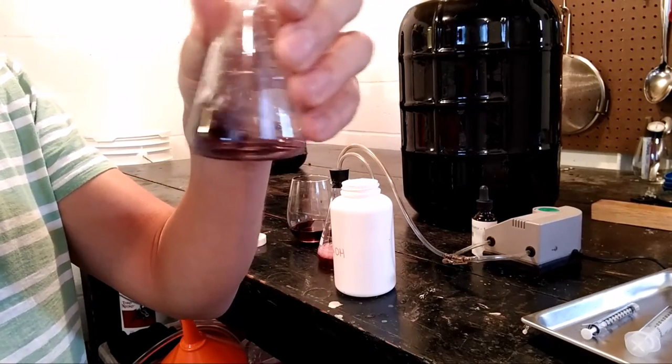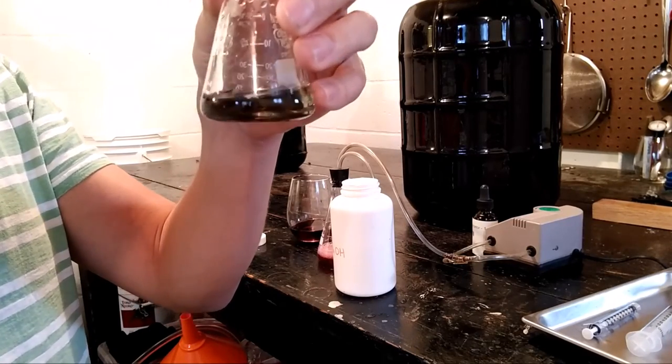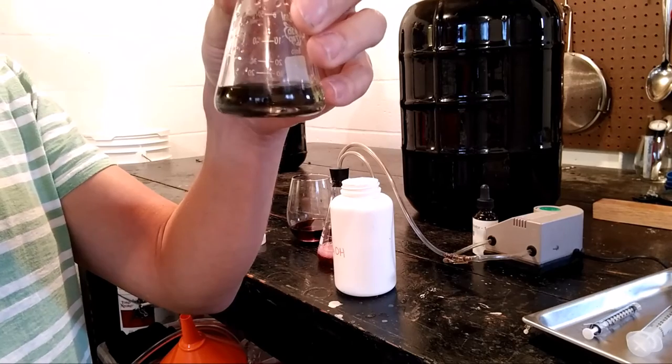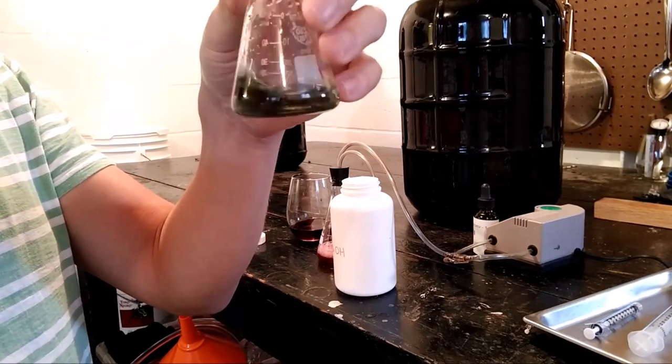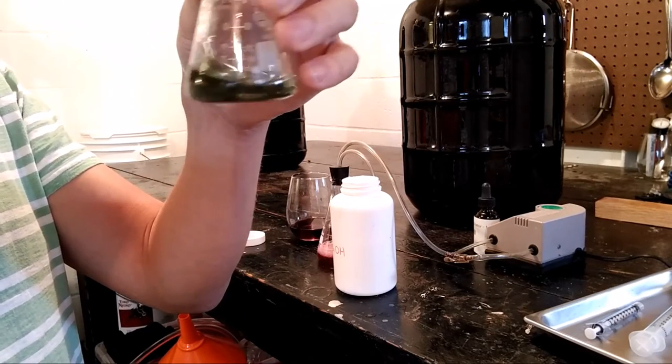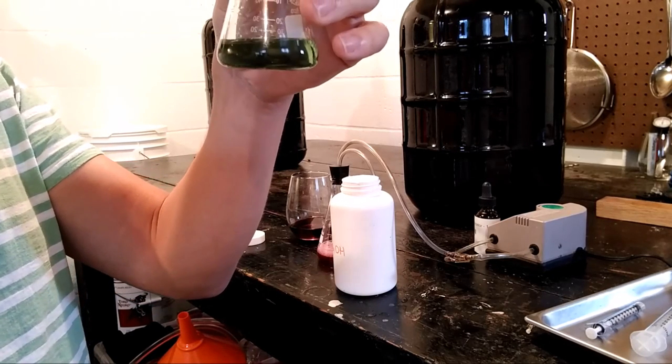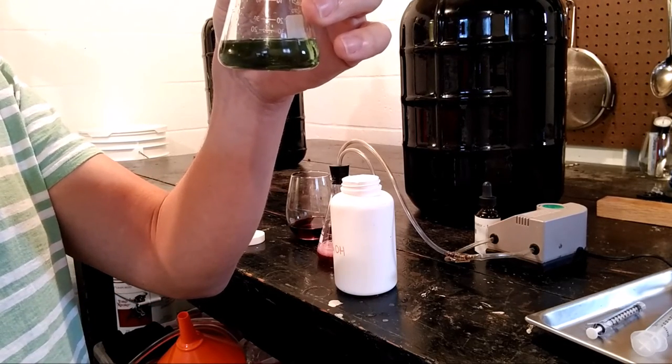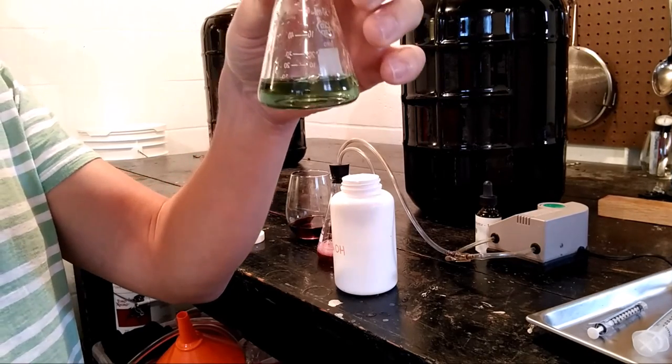We're at one milliliter. It's already starting to turn actually. We'll swirl a little bit. 1.5 milliliters. A little bit more and we'll be right at where we started. It looks like we're at about two milliliters—that brought us back to that green color.